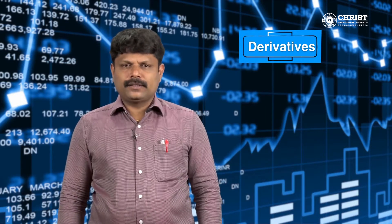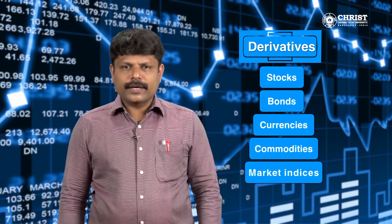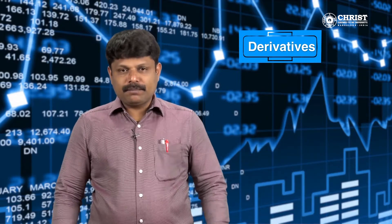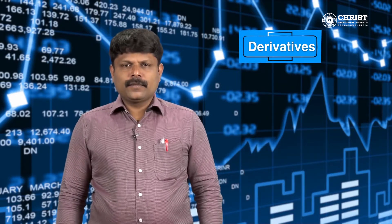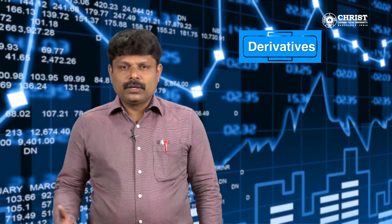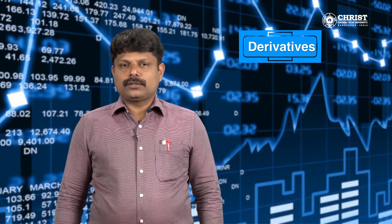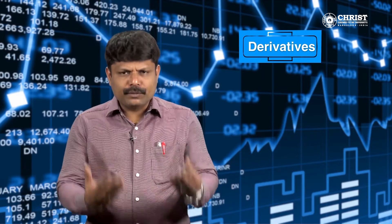The commonly used underlying assets are stocks, bonds, currencies, commodities, and market indices. The value of underlying assets keeps changing according to market conditions. The trader cannot predict the future price, but he can restrict his loss by entering derivative instruments.